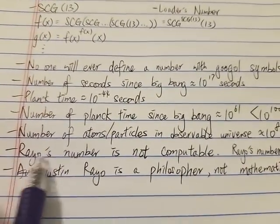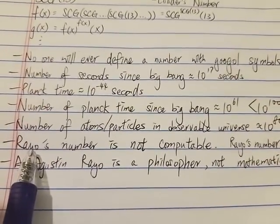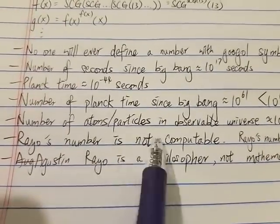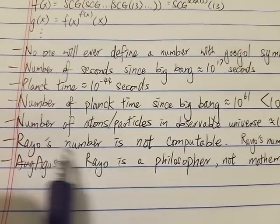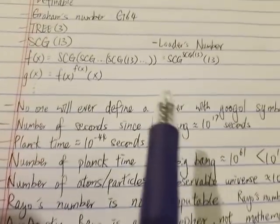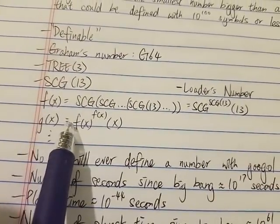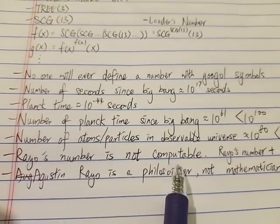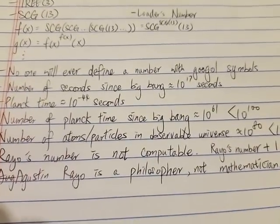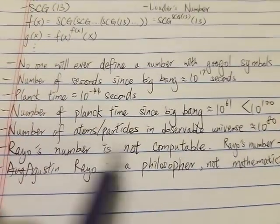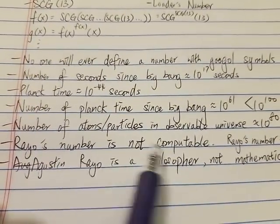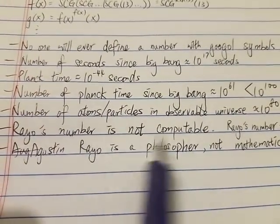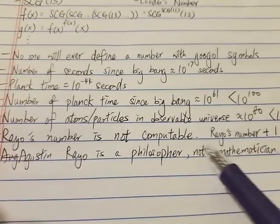And it's safe to say that no one will ever know how big Rayo's number is or even what Rayo's number is. Because there's no limit on how powerful we could define a symbol, and Rayo's number is bigger than any number that could be defined with a googol symbols or less. Basically, we only know that Rayo's number is just very, very big, basically bigger than anything we could ever conceive.